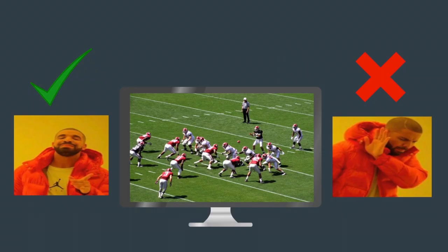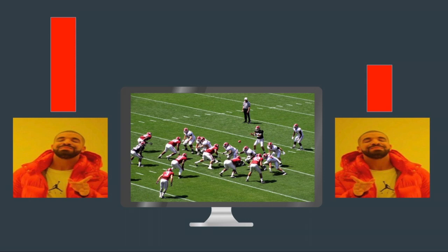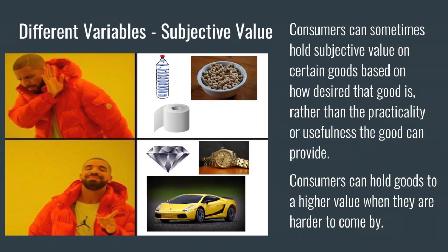It is important to note that utility is relative and is dependent on the individual and the situation. For example, some people may gain pleasure from watching football, but others may not. Even if both people enjoy watching football, one might enjoy it more than the other. Consumers also hold subjective value over certain goods depending on how desired they are, regardless of if they hold any use. Items such as diamonds are scarce and hard to come by, thus increasing their subjective value.